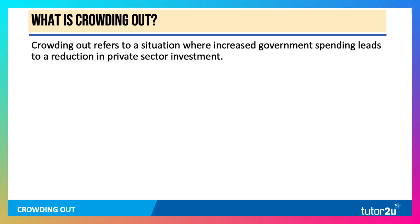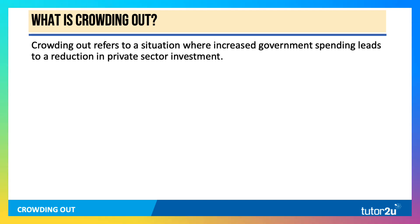So what is it? Crowding out is a situation in which increased government spending and borrowing leads to a fall in the level of private sector investment.